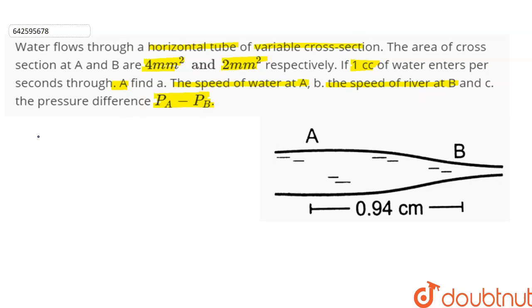So we are given area of cross-section of section A which is equal to 4 mm square or 4 into 10 to the power minus 6 meter square. The area of cross-section at B is equal to 2 mm square or 2 into 10 to the power minus 6 meter square.